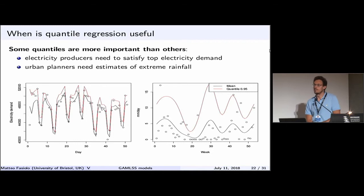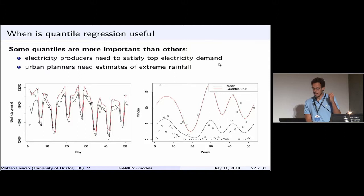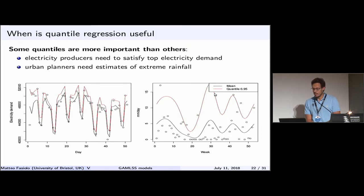In applications like electricity demand forecasting, you don't care about average demand — you want to fit a very high quantile because you need to satisfy peak demand. Similarly, an urban planner designing flood barriers is interested in the potential maximum rainfall, not the average, so they'd look at a high quantile such as quantile 0.95.